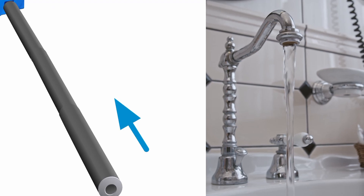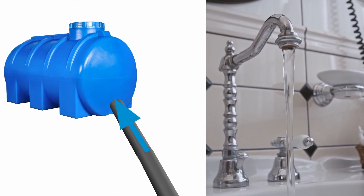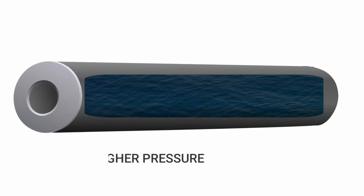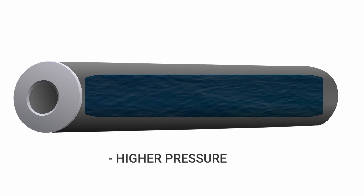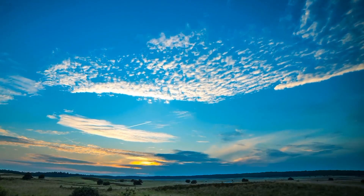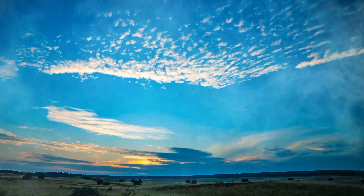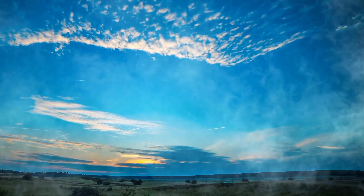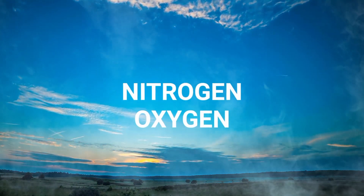Water from the tap passes through pipes before reaching large storage tanks. The water in the pipes is under higher pressure than normal and is also at a cooler temperature. These two conditions are ideal for dissolving certain gases that are abundant in our atmosphere, such as nitrogen and oxygen.